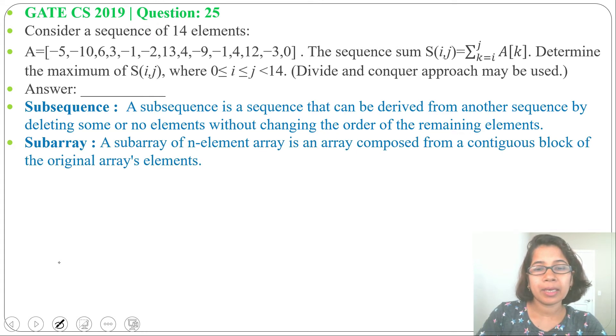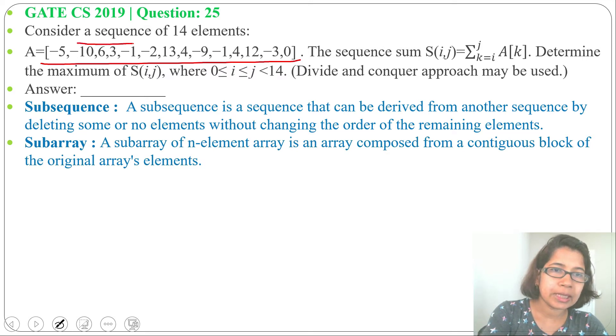Next is subarray. A subarray of n-element array is an array composed from a contiguous block of the original array elements. From this array, if we choose contiguous block of elements, that is a subarray. Like we will choose these four, so this is a subarray starting from minus 10 till minus 1, or we can choose 6 to minus 3.